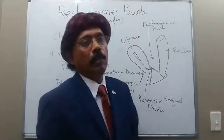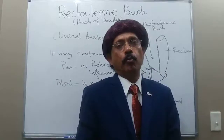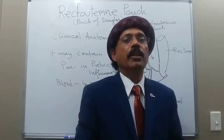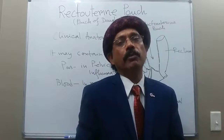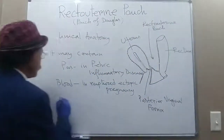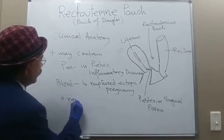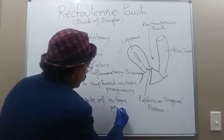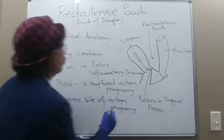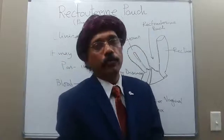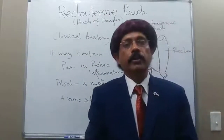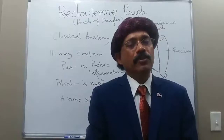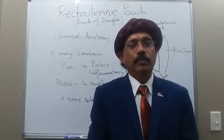Sometimes the implantation of the morula or the embryo happens inside the abdominal cavity on very rare occasions, so it may also be a site of ectopic pregnancy — possible but very rare. That's all about the pouch of Douglas: boundaries, contents, and its clinical anatomy. If you like my video, please support my channel, subscribe, share the information with your friends, and have a nice day.